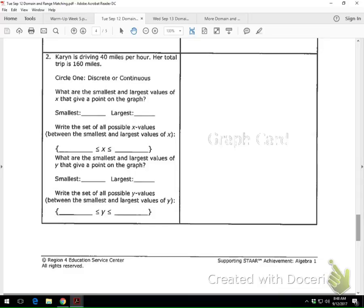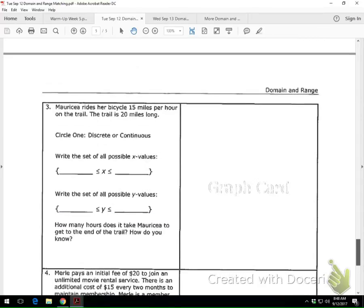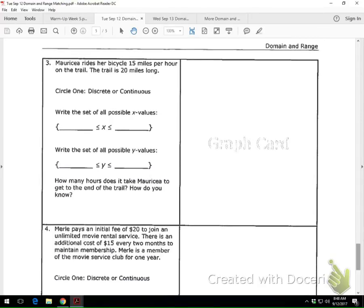Okay. Number three. Said, Maricia rides her bicycle 15 miles per hour on the trail. The trail is 20 miles long. Discrete or continuous? Continuous. What graph? I got an E.